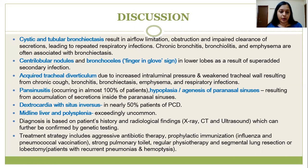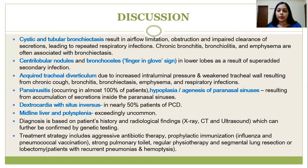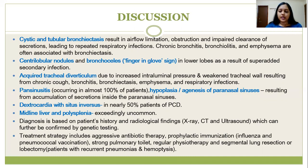Following the diagnosis, the goals of management and treatment are improvement of lung function and limitation of disease progression. The treatment strategy includes aggressive antibiotic therapy, prophylactic immunization, strong pulmonary toilet, regular physiotherapy, and in patients with recurrent pneumonias and hemoptysis, segmental lung resection or lobectomy is advised. To conclude, early diagnosis, symptomatic treatment, and prevention of infections is important in patients of Kartagener's syndrome. Granting access to proper diagnostics and referral to a higher center is necessary.